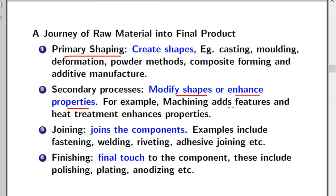In addition to physically modifying the shape, the secondary process also enhances mechanical properties. These are nothing but heat treatment processes. Heat treatment processes change the mechanical properties of the component — for example, it may increase the strength, decrease the yield point, or harden the surface. All these procedures come under secondary processes.